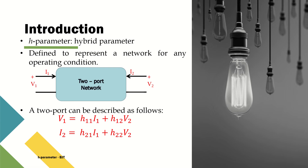For this two-port network, we can characterize it in terms of hybrid parameters using the four measurable parameters at the input and output sides. Using the hybrid parameters, we define the network as: input voltage V1 = H11·I1 + H12·V2, and output current I2 = H21·I1 + H22·V2. Here H11, H12, H21, and H22 are the hybrid parameters, or H-parameters, of the two-port network.